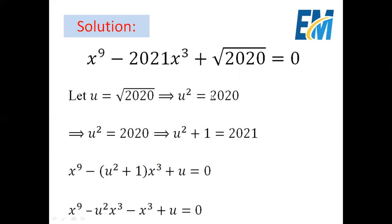Then u squared equals 2020, and u squared plus 1 equals 2021. So instead of square root of 2020 we write u, and instead of 2021 we write u squared plus 1. The equation becomes x to the power 9 minus (u squared plus 1) times x cubed plus u equals 0.